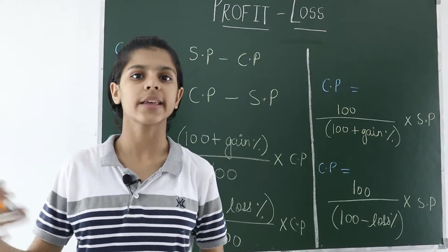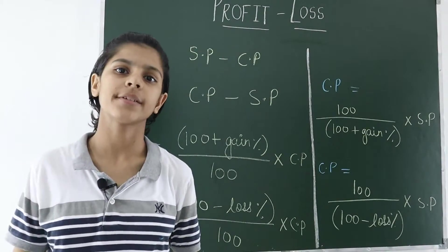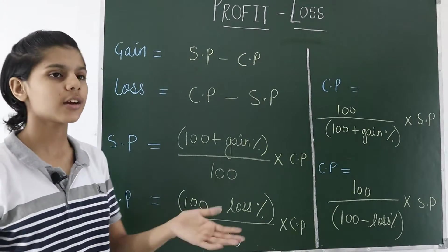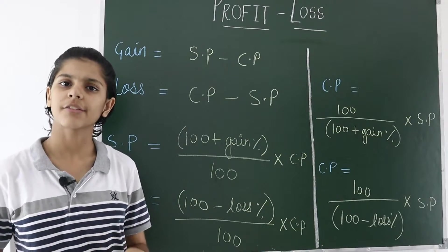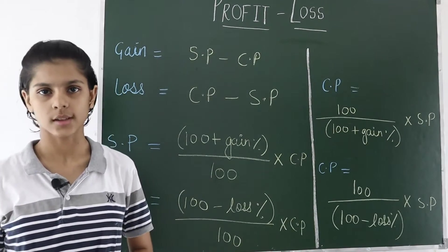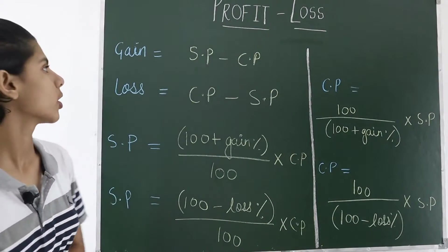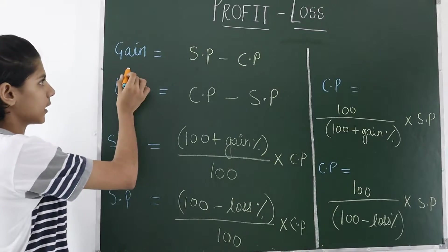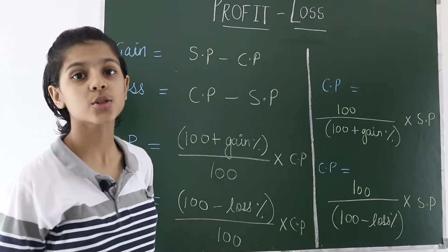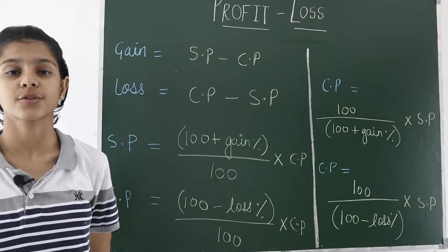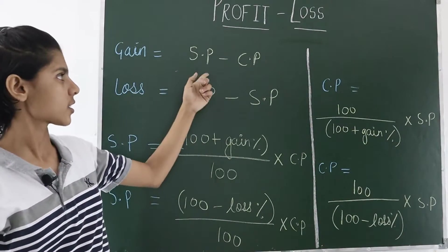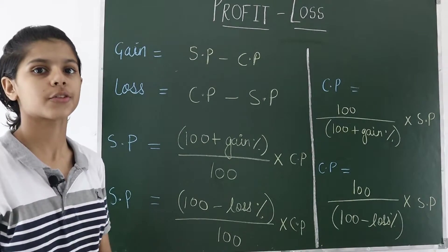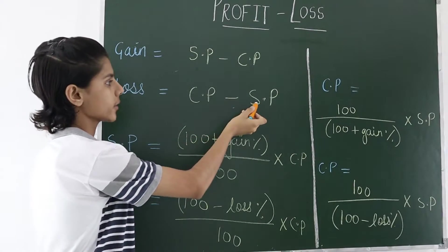And when I sell that object to anyone, the price at which I sell it is known as the selling price or SP. Whenever we are buying or selling any object, we have either profit or loss — there are only two things. Gain equals selling price minus cost price. When there is a loss, the formula is cost price minus selling price. If the cost price is more and I am selling at a lower price, then obviously I am having a loss.